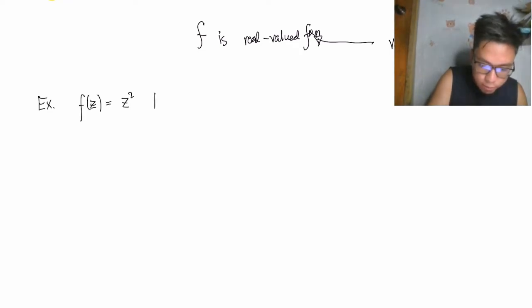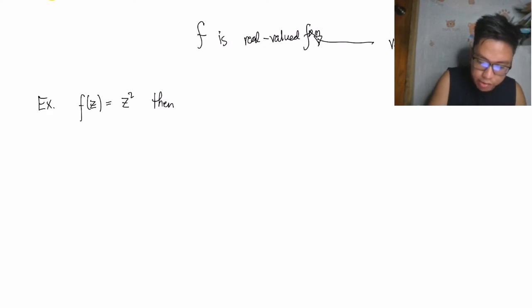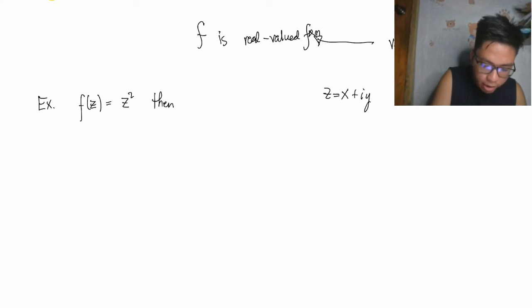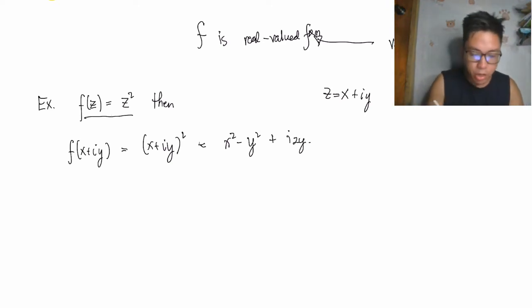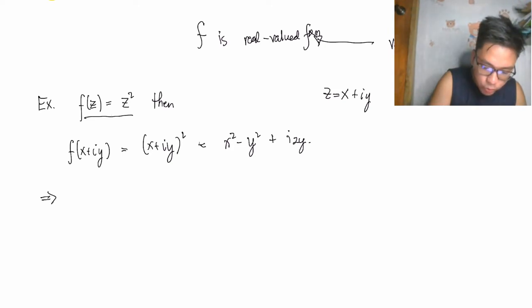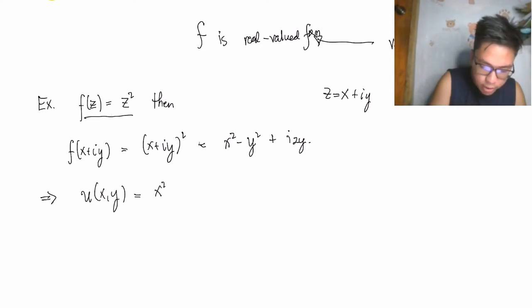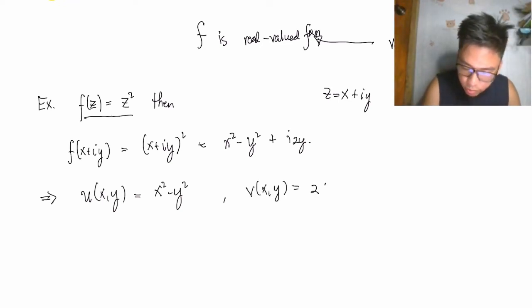Let's consider the example f(z) = z². Suppose z = x + iy, then f(x + iy) = (x + iy)² = x² − y² + 2xyi. This tells us that u(x, y) = x² − y² and v(x, y) = 2xy.